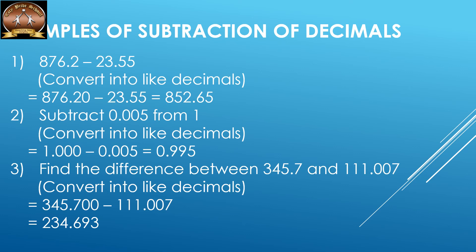This next one is interesting: subtract 0.005 from 1. Remember, whatever number comes after 'from,' take it first. So it is 1.000 minus 0.005 — because the number of decimal places in the second decimal is three, both must have three decimal places. The answer is 0.995.